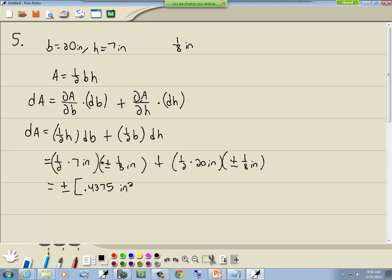Over on this side we've got 1/2 times 20, which is 10, and we've got 10 times 1/8, which gives us 1.25 inches squared. When you add those two together, we get plus or minus 1.69 inches squared.